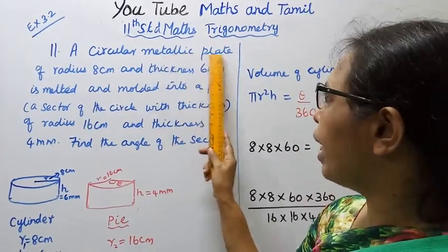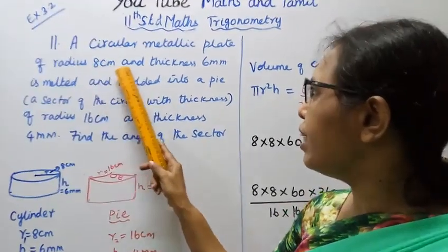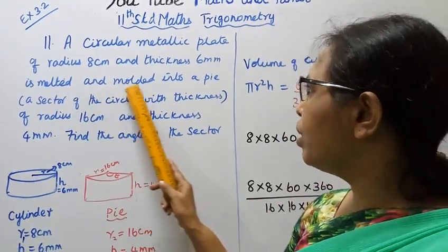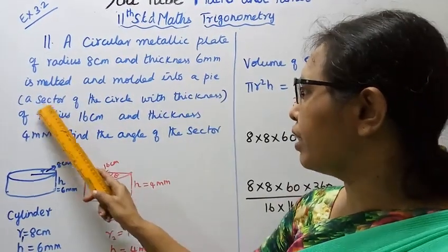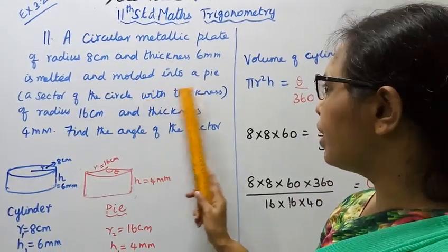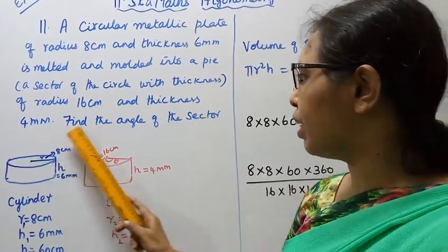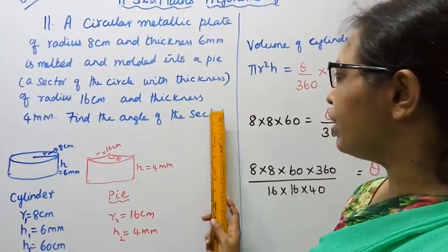A circular metallic plate of radius 8 cm and thickness 6 mm is melted and molded into a pie, a sector of the circle with radius 16 cm and thickness 4 mm. Find the angle of the sector.